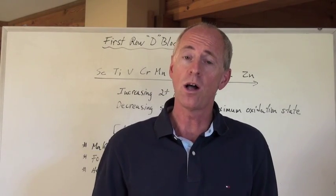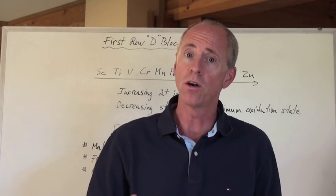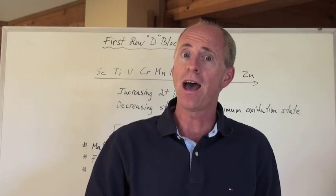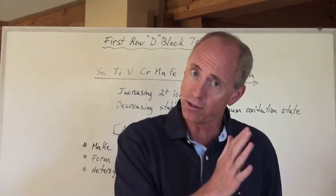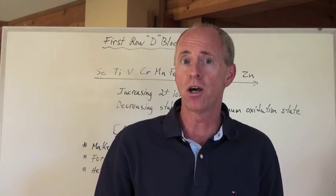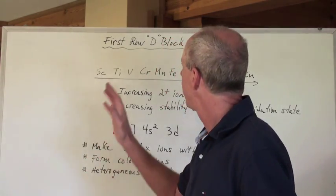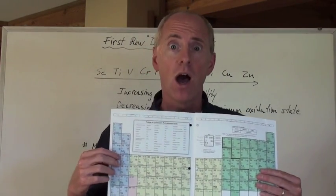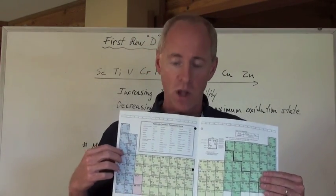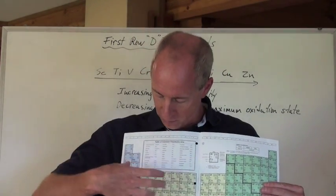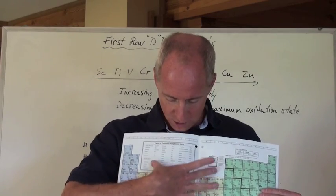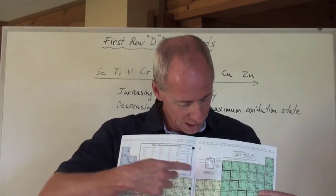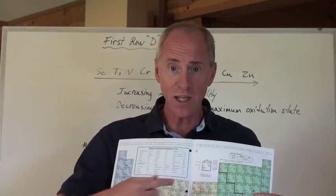In some courses of study, you have to be aware of the properties that certain metals have in the transition block of the periodic table. So we'll take the first D block on the periodic table — the transition elements right here, going from scandium to zinc.